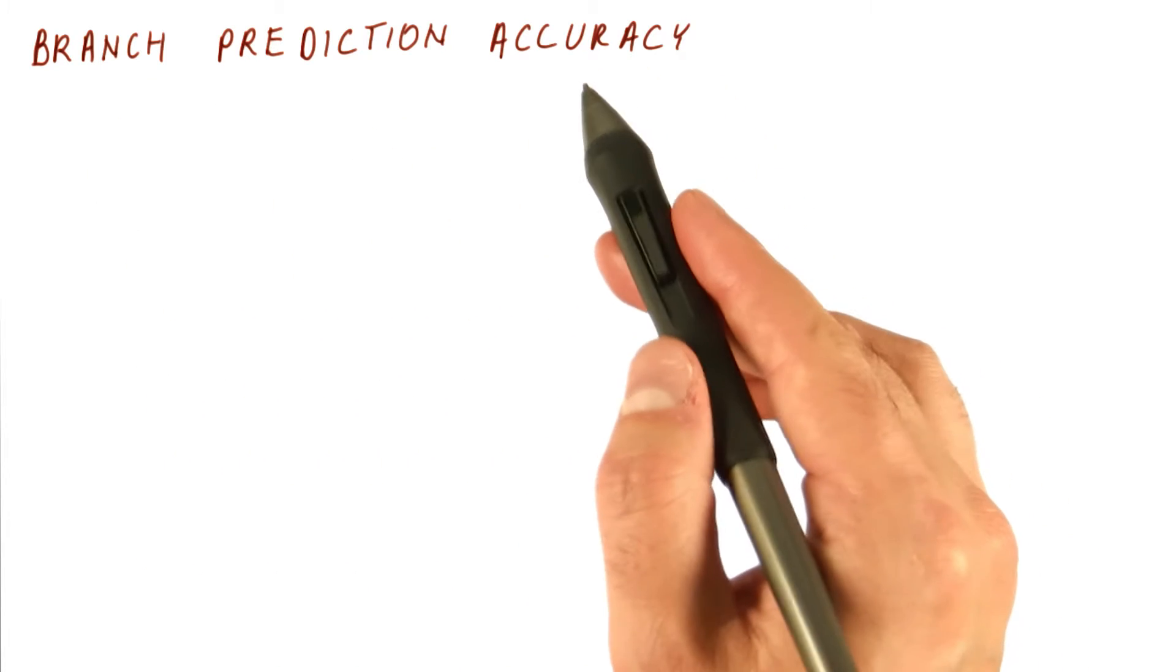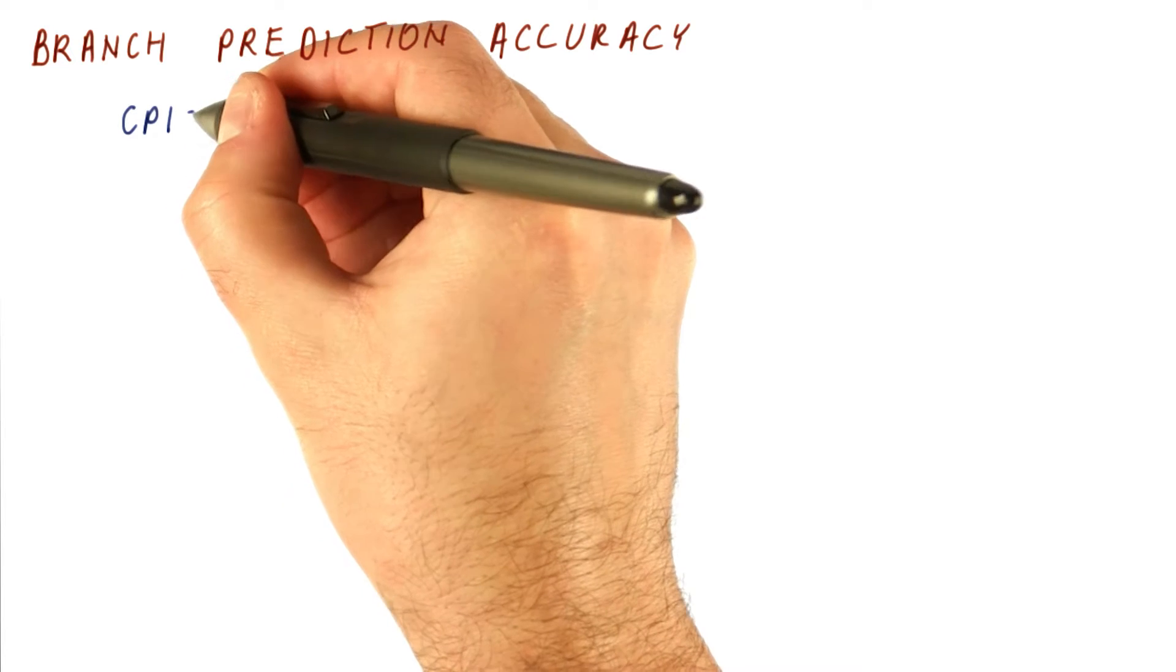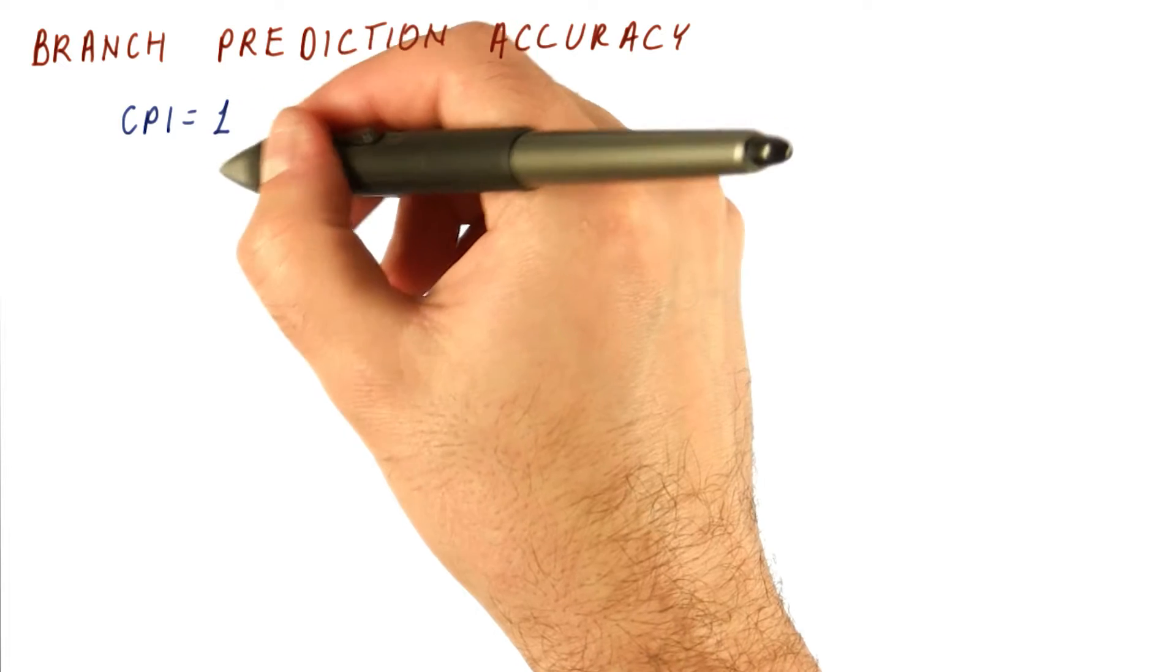So now let's look at branch prediction accuracy and how it affects performance. Our CPI can be written as one, which is the CPI we get with ideal pipelining.